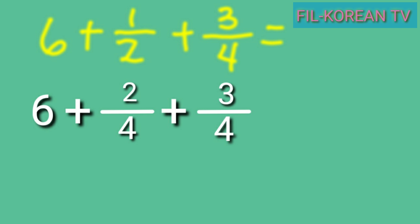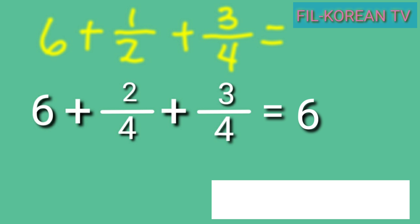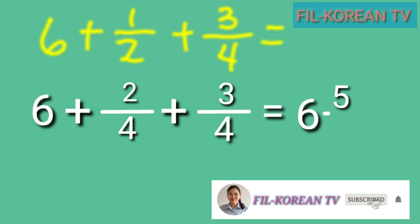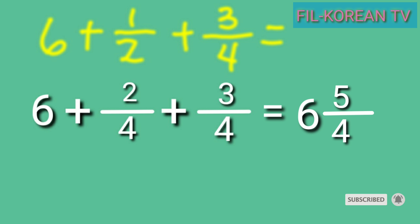Since there is only one whole number, just copy the whole number six, then add the numerators. Two plus three equals five, and copy the LCD four. The answer is six and five fourths.